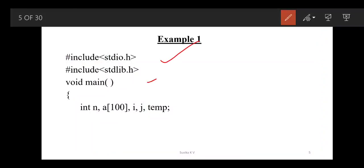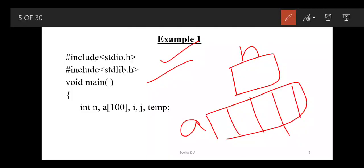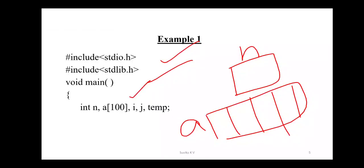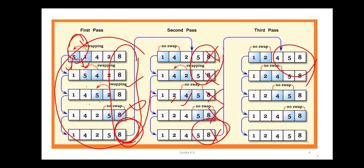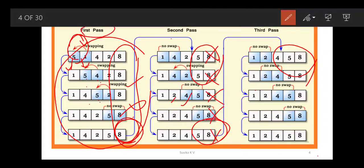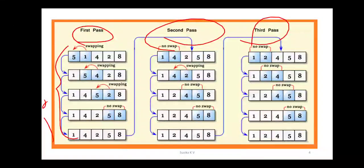As usual, we include stdio.h and stdlib.h. n is the size of the array, a is the array name and can store up to 100 elements. i is for the main outer loop — that is the first pass, second pass, and so on. j is for the sub-steps within each pass. i is for the main loop and j is for the sub-steps.